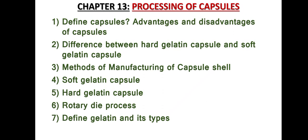Chapter thirteen: Processing of Capsules. There are seven important questions. Question one: Define capsules and write advantages and disadvantages of capsules. Question two: Difference between hard gelatin capsule and soft gelatin capsule. Question three: Methods of manufacturing of capsule shell. Question four: Soft gelatin capsule. Question five: Hard gelatin capsule. Question six: Rotary die process. Question seven: Define gelatin and its types. These are the seven important questions in chapter thirteen.